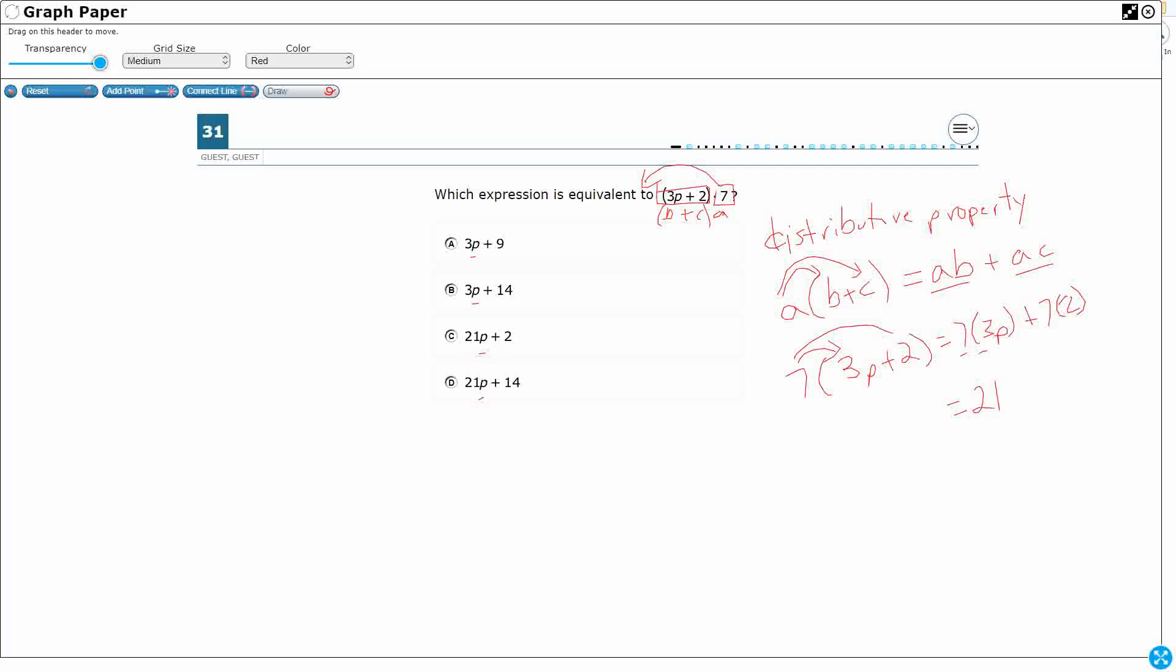But I can multiply 7 times 3, that's 21. So I've got 7 groups of 3p, so that's really just 21p. And then 7 times 2, that's 14. So there we go. 21p plus 14. So I see that answer down there as d.